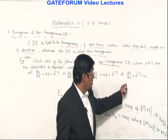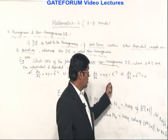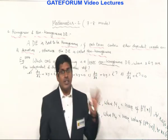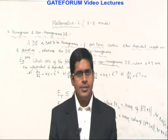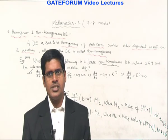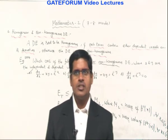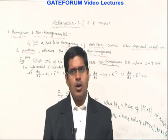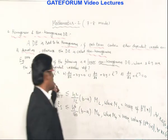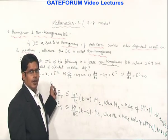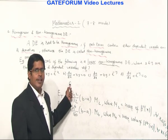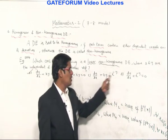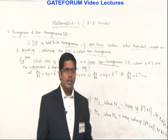Options C and D are both non-linear; options C and D are both homogeneous. Next, Sneha confirms: in the GATE 2014 question, option C — dy/dx + xy = e^(−y) — is a non-linear homogeneous equation. Rahul asks for a repeat: option A is linear non-homogeneous, option B is linear homogeneous, options C and D are both non-linear and both homogeneous.